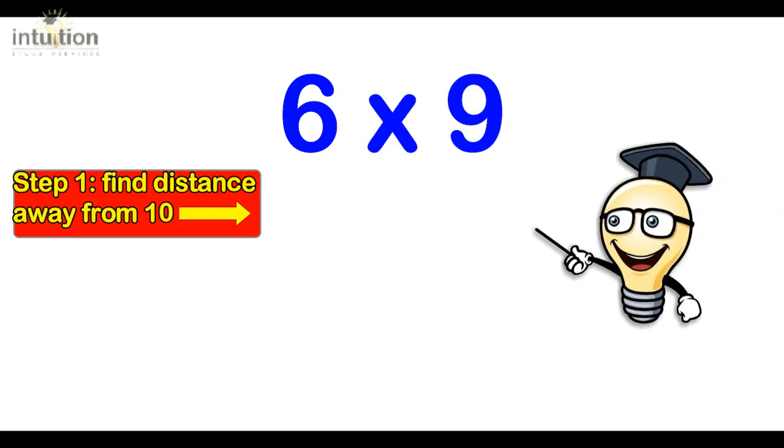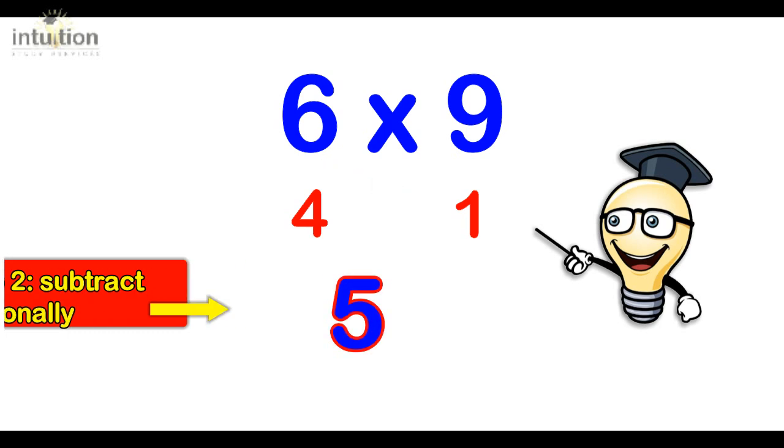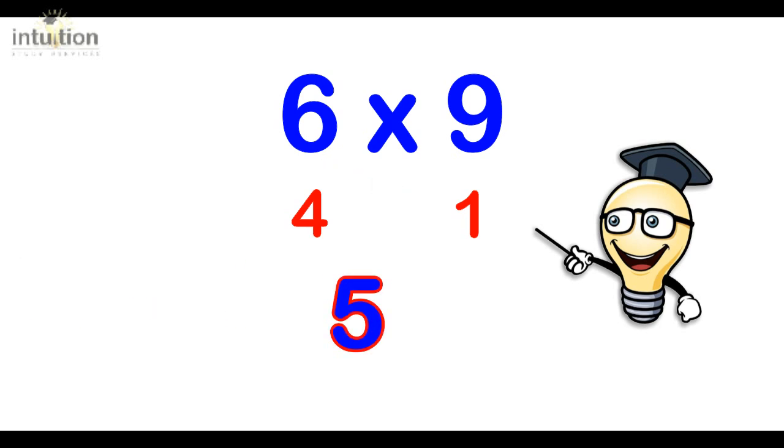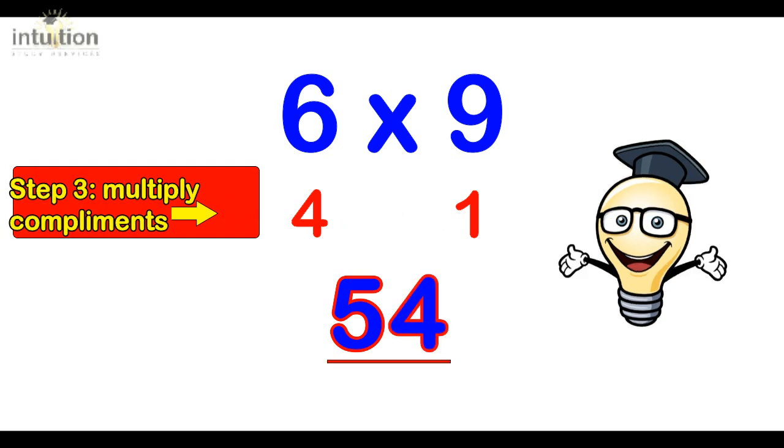Okay, so let's take a look at another example. Let's consider 6 times 9. Okay, so step 1 is we find out how far each number is away from 10. So 6 is 4 away from 10 and 9 is 1 away from 10. Then step 2, we subtract diagonally. So 9 take away 4 is 5, and you also get the same answer if we did 6 take away 1. So that gives our first part of the answer, and then we multiply the bottom numbers. So 4 times 1 gives us 4. So the answer is 54.